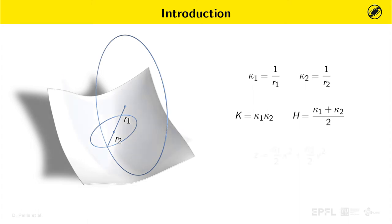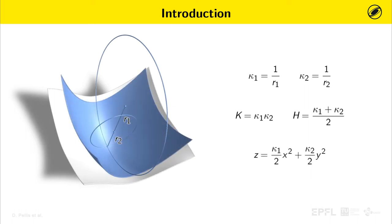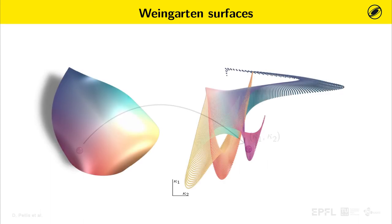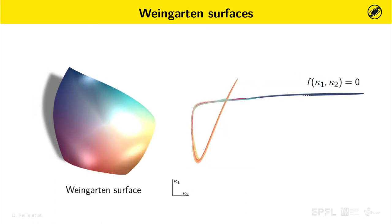With the two principal curvatures, we can compute the osculating paraboloid that represents the second-order approximation of the surface at the point. Let us now consider a map that associates at each point of the surface a point in the plane with coordinates given by the surface principal curvatures K1 and K2. For a generic surface, this map forms a two-dimensional region in the principal curvatures plane. For a Weingarten surface, since the two principal curvatures are in functional relation, this map shapes a curve.